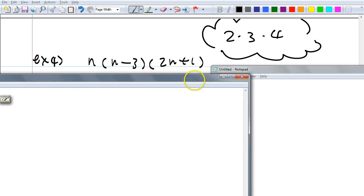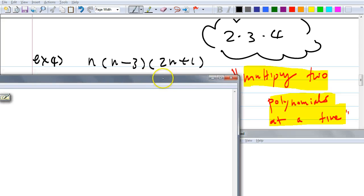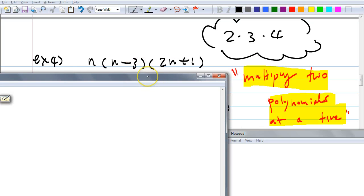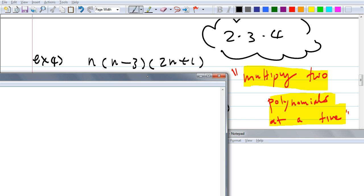So write this down. A lot of times people want to just distribute this n to both of these polynomials. That'd be wrong, right? You multiply two polynomials at a time when you're multiplying about your polynomials. Does that make sense? So it's like how you multiply numbers. Do you see how they're related like that?